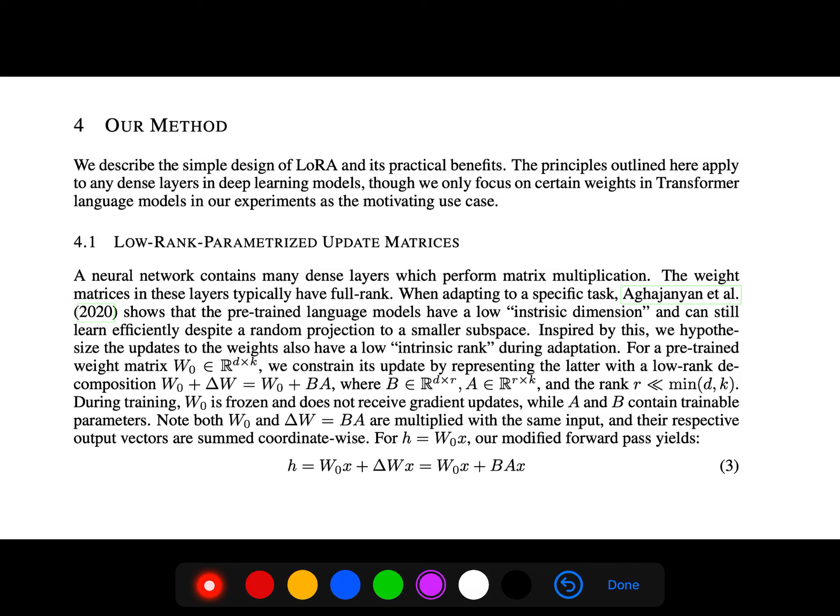But when adapting to a specific task, this reference shows that pre-trained language models have a low intrinsic dimension and can still learn efficiently despite a random projection to a smaller subspace. So we hypothesize the updates to the weights also have a low intrinsic rank during adaptation.